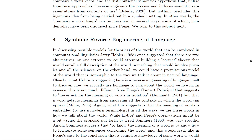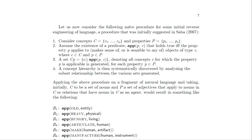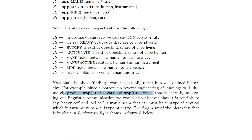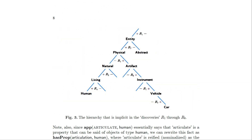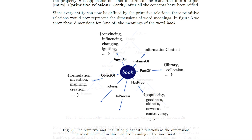Jerry Hobbs once proposed two alternatives for models of the world in computational linguistics. One extreme suggests building a correct theory encompassing a full description of the world involving physics and all the sciences. On the other hand, we could have a promiscuous model of the world that aligns with the way we naturally talk about it in language. To illustrate a reverse engineering approach, consider a naive procedure assuming a predicate app(P, C), which holds true if property P applies to objects of type C. By analyzing linguistic communication, we discover expressions like 'heavy car' and 'old car,' indicating that 'car' must be a subtype of 'physical,' which in turn must be a subtype of 'entity.' LLMs have demonstrated that bottom-up reverse engineering of language at scale is viable, but due to their sub-symbolic nature, they do not provide an explainable model of how language works.